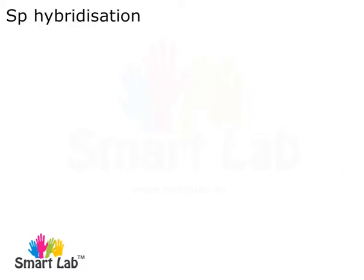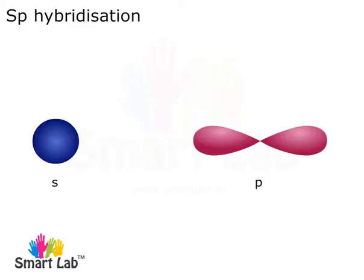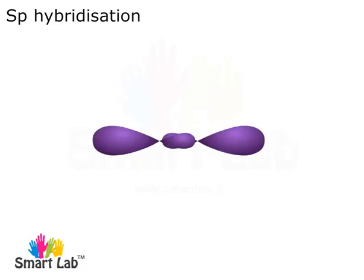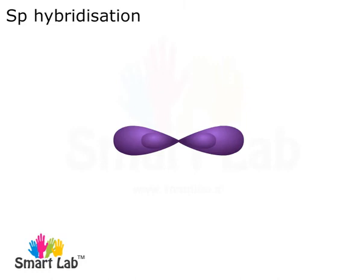SP hybridization: 1s and 1p orbitals undergo SP hybridization to give two identical SP hybrid orbitals. The two hybrid orbitals formed lie along a straight line with an angle of 180 degrees.